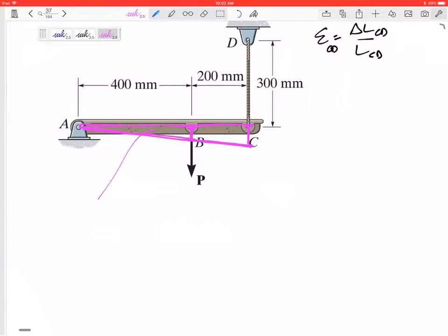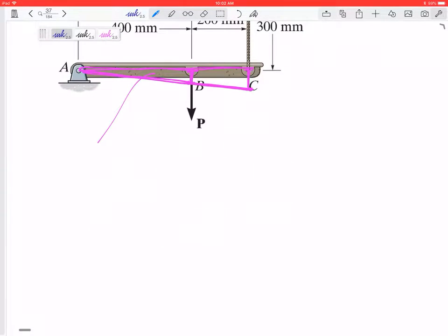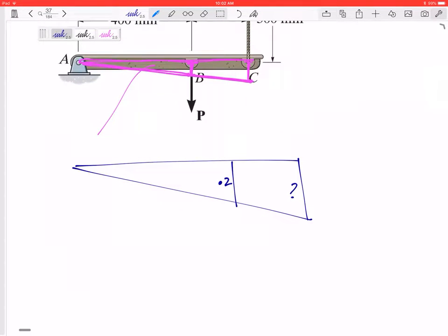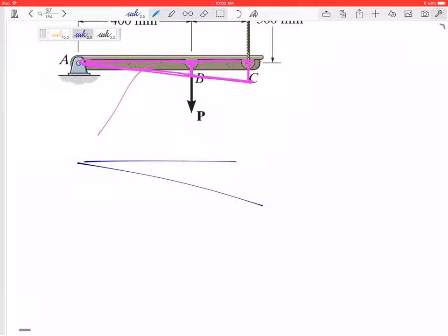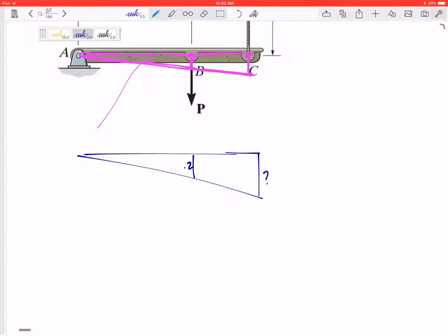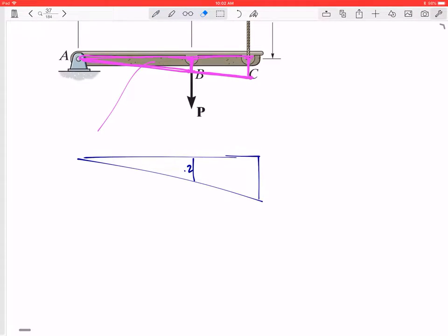So do you see, I'm gonna redraw this maybe a little bit larger out here. So if this is 0.2 millimeters, we're kind of looking at what is this right here. I'm exaggerating a lot, but if this is 0.2, then what is this right here? Let's call this maybe H.